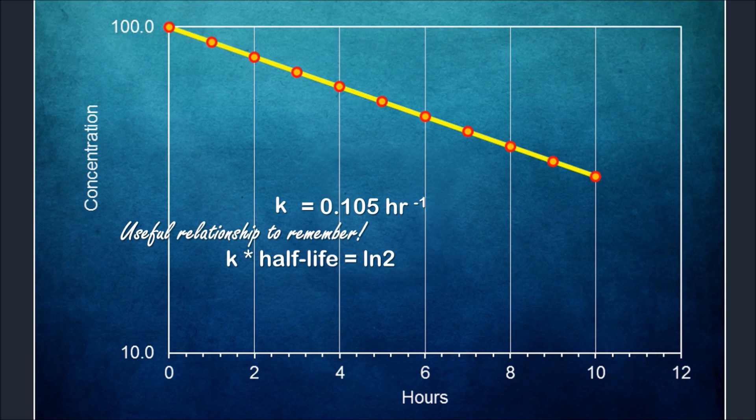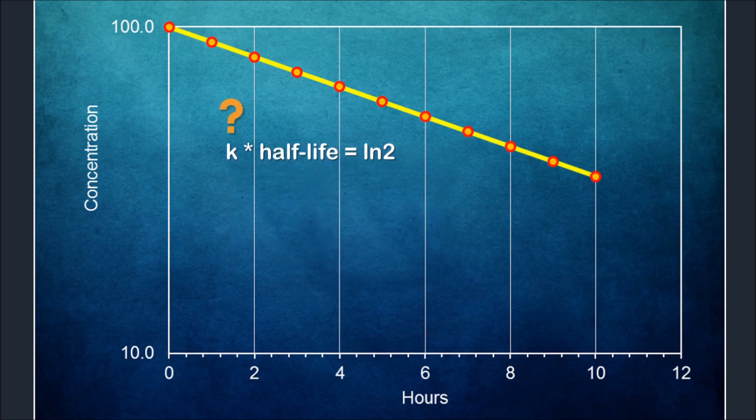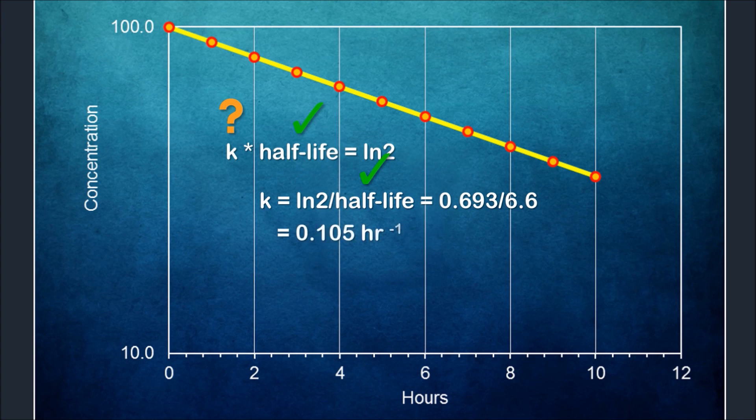For example, now that we know the elimination rate constant, we can calculate the half-life of this antihistamine to be about 6.6 hours. In many clinical situations, it is more likely that we have an estimate of the elimination half-life rather than the elimination rate constant. So we can make use of this half-life information to estimate k.